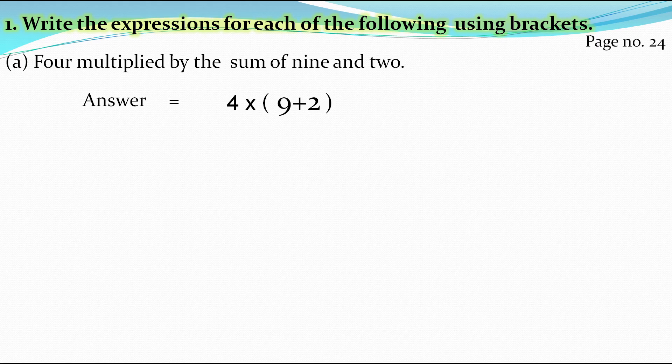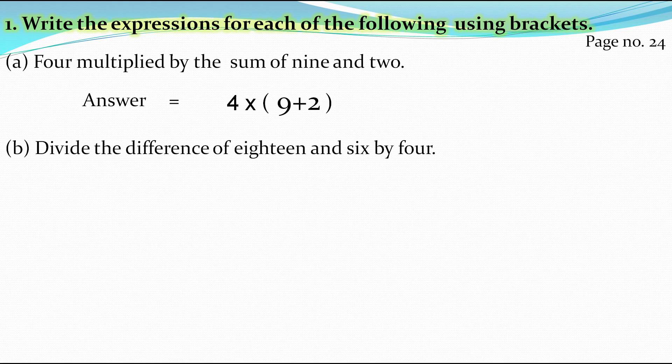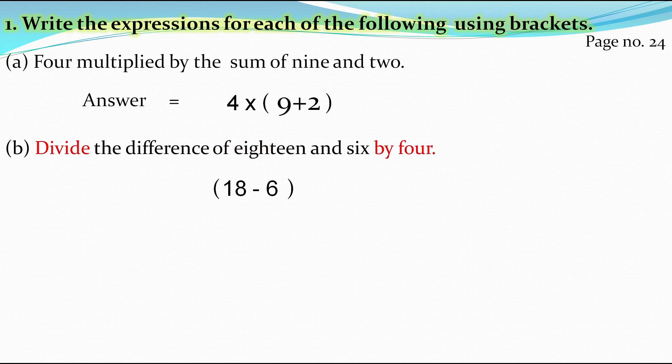The next expression is: divide the difference of 18 and 6 by 4. The separate expression is the difference of 18 and 6, so first we write 18 minus 6. As it is a separate expression, we put it in the bracket. Then, focusing on the remaining part — divide by 4 — we divide this bracket by 4. So the final answer is (18−6) ÷ 4.